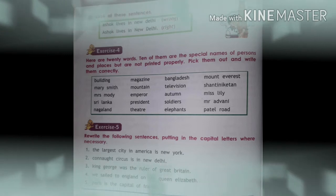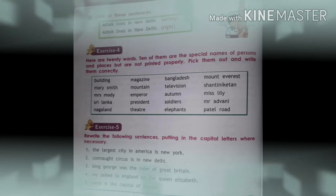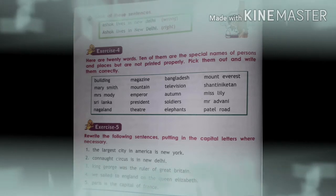Some words are not written in capital letters. Capital letter shows that it is a proper noun. So names are not in capital letters. Places are also not in capital letters. You have to find out the correct words which come in the category of proper noun. Do it by yourself. You will get the answer later in this video.